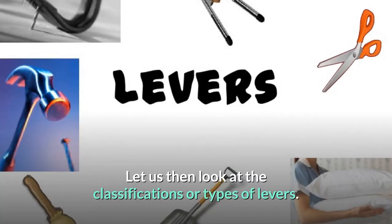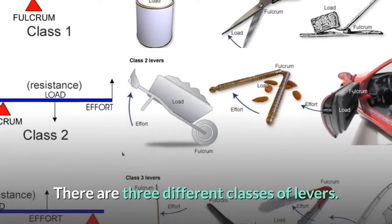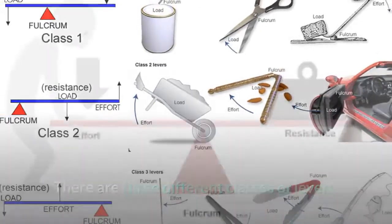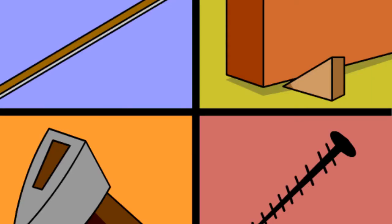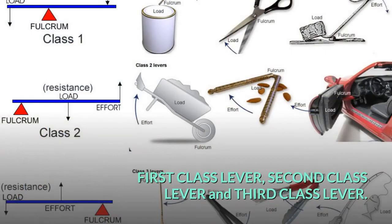Let us then look at the classifications or types of levers. There are three different classes of levers. This depends on the relative positions of the load, pivot and effort. The classes of levers are: first class lever, second class lever, and third class lever.